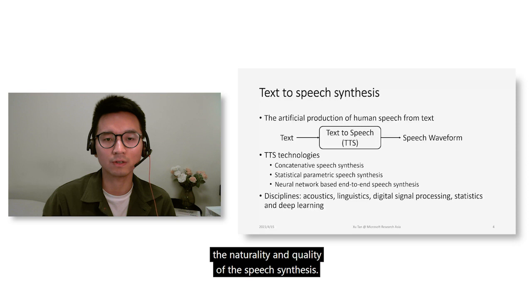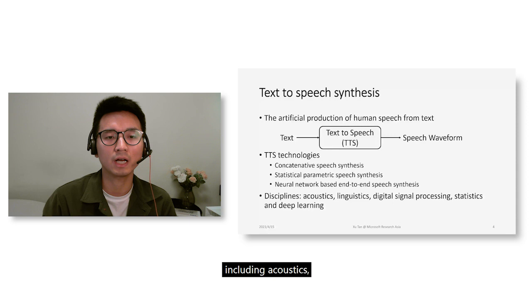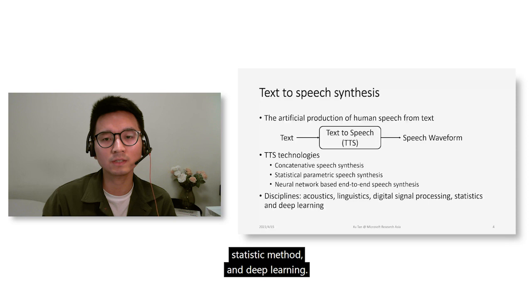As deep learning developed, neural network-based end-to-end speech synthesis systems were proposed, which can greatly improve the naturalness and voice quality of speech synthesis. Basically, text-to-speech synthesis requires interdisciplinary technologies, including acoustics, linguistics, digital signal processing, statistical methods, and deep learning.